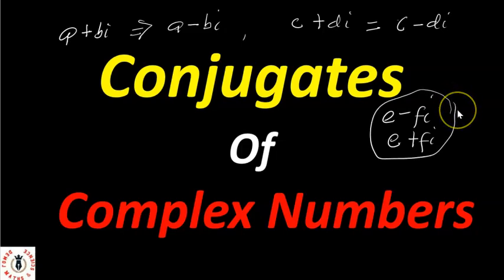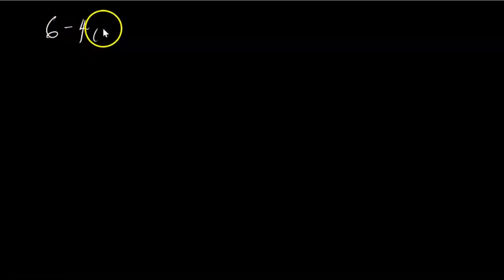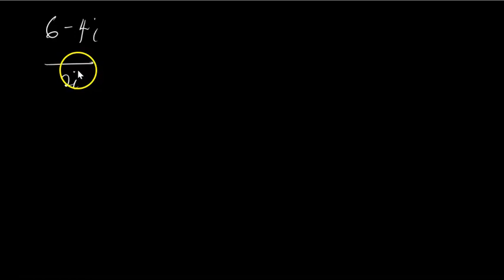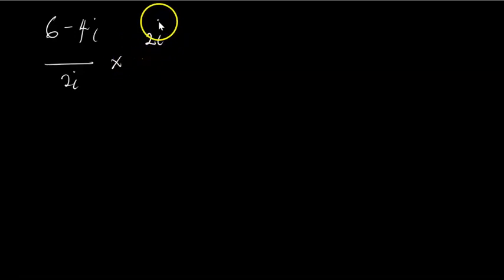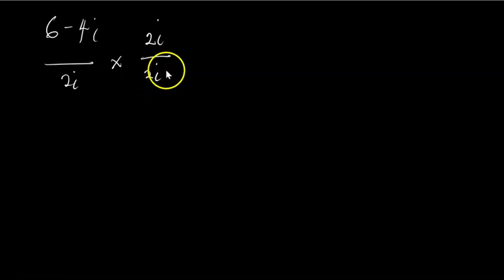Let's look at the first example. We have (6 - 4i) / (2i). Now if I'm to perform this division, what I'll do simply is to multiply both the numerator and the denominator by 2i.